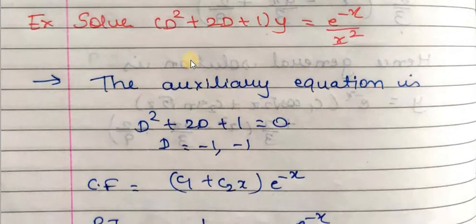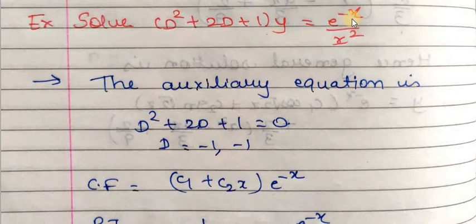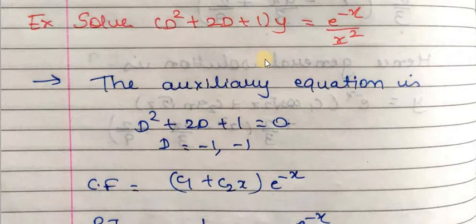Let's start with Example 1. We have to solve the differential equation (D² + 2D + 1)y = e raised to minus x upon x squared. This is of the form f(D)y = x, so its solution will be y equals CF plus PI.